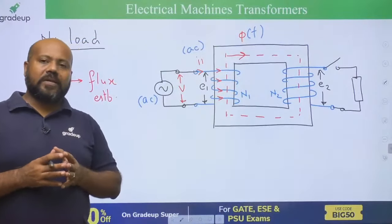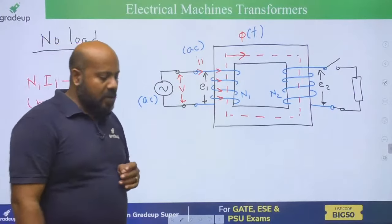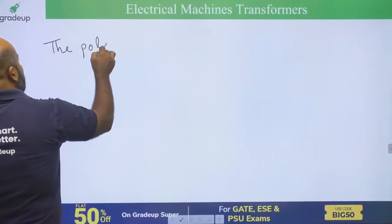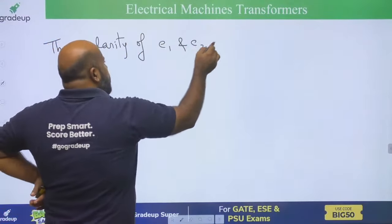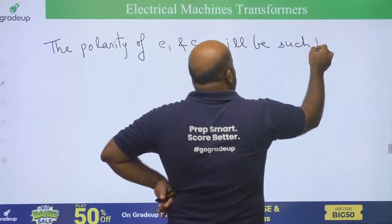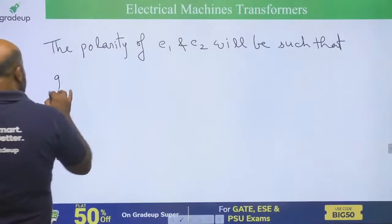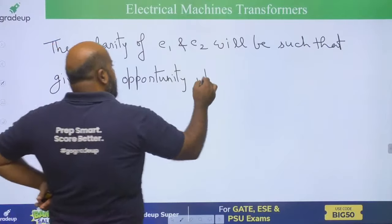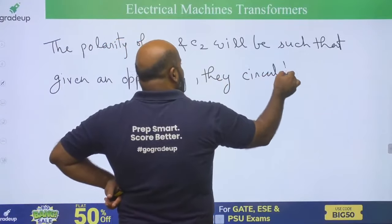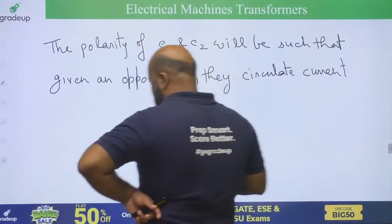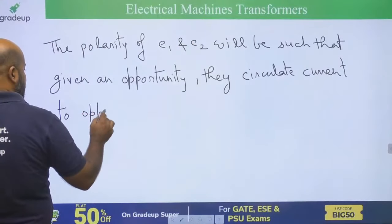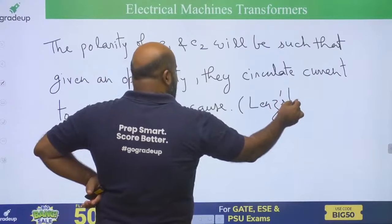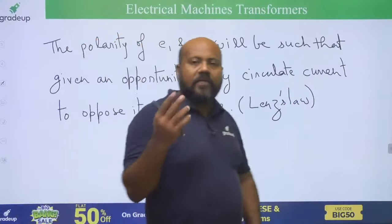We are very much interested to know what is the polarity of these two induced EMFs, E1 and E2. The polarity of E1 and E2 will be such that given an opportunity, they circulate current to oppose their own cause. This is nothing but Lenz's law — the effect opposes the cause.